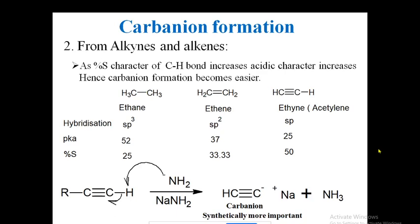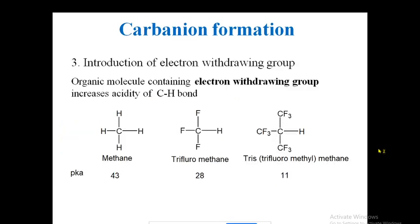Now the third method: introduction of an electron withdrawing group. If you introduce an electron withdrawing group into any molecule, it definitely increases the acidity of the C-H bond. For example, here is methane, and here is trifluoromethane — three fluorine groups are attached to this carbon, replacing three hydrogens with fluorine, an electronegative atom. And here the fluorine is replaced by a CF3 group, a trifluoromethyl group.